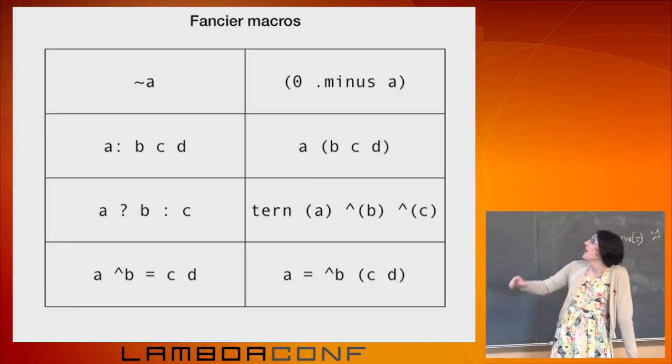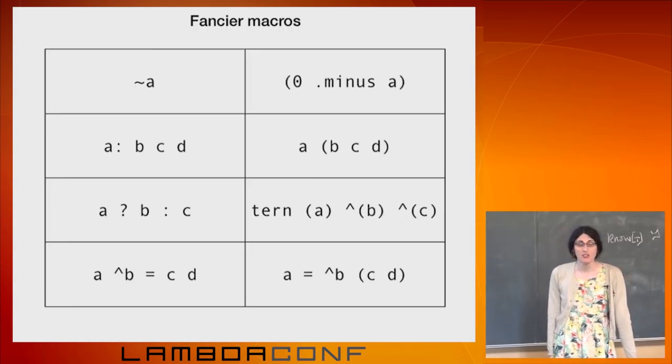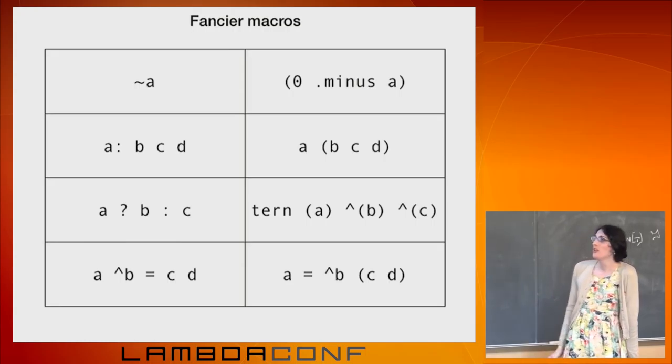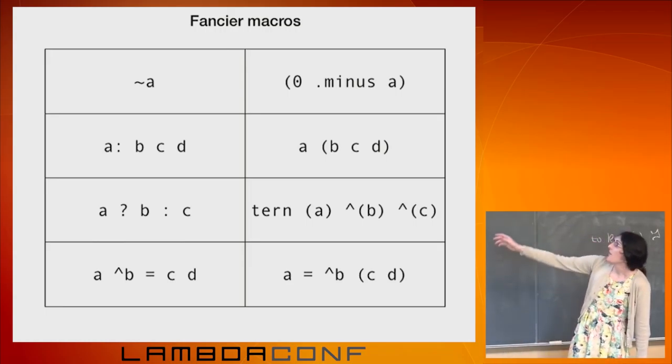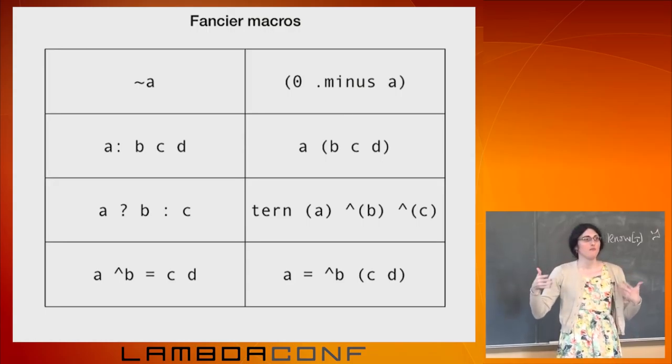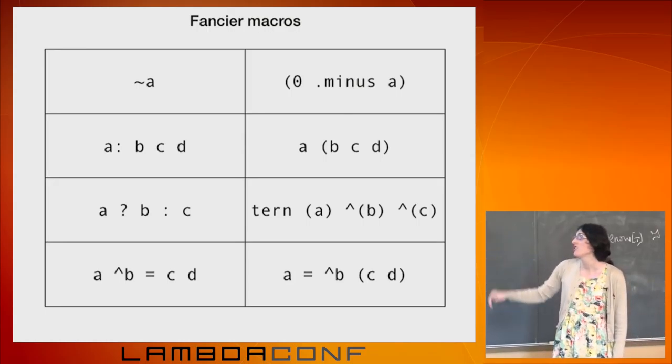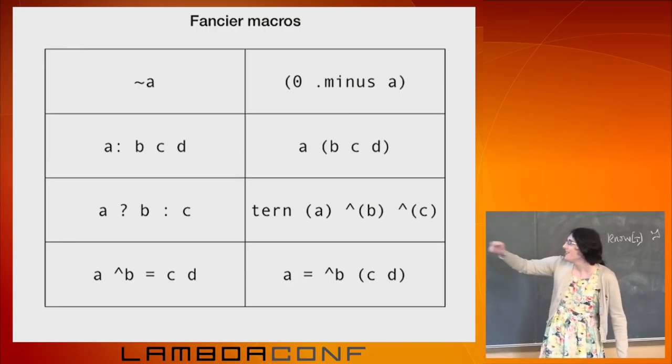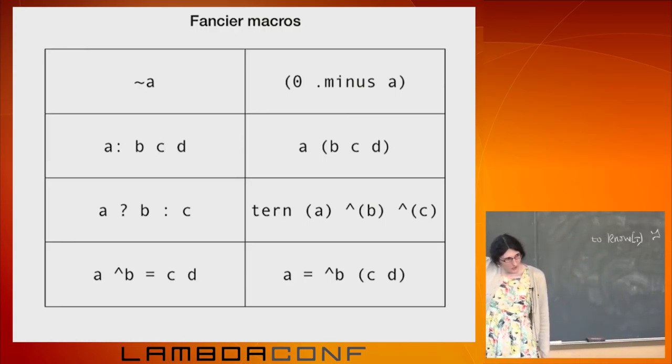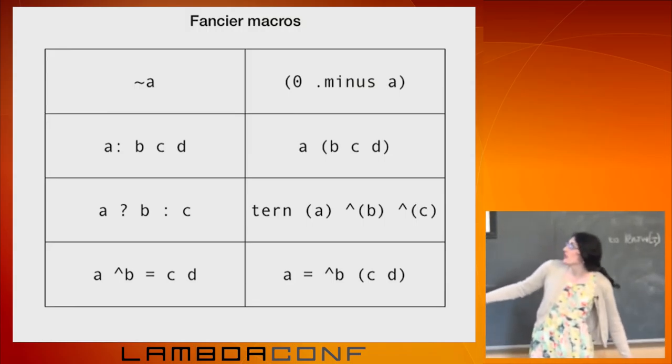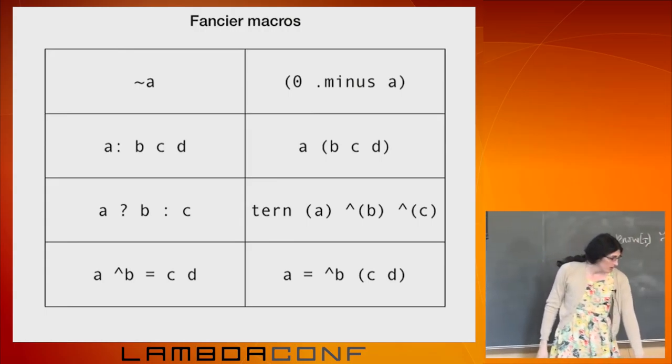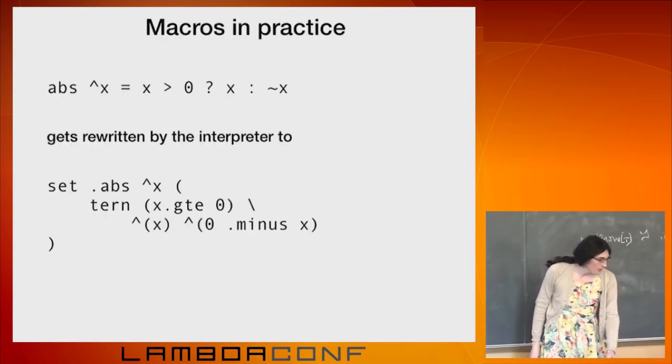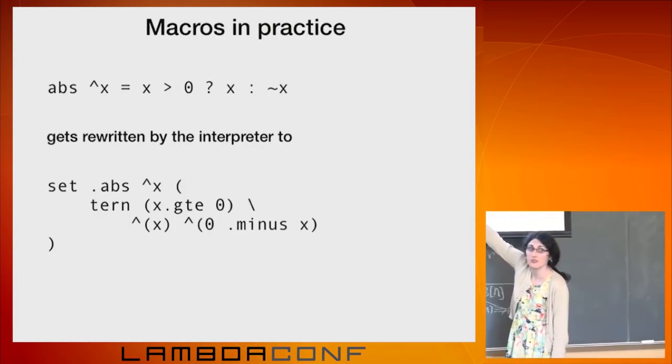A couple slightly more weirder things. I'm going to use tilde a for negation because ML. I'm going to say colon is just the dollar sign from Haskell. I wrap the right side in parenthesis because I hate symbols. And I want to avoid them wherever I can. I'm going to have the question mark colon operator from C, the ternary operator. All it does is call tern. It's not doing anything magic. And then because you spend a lot of time binding variables to anonymous functions in this language, I'm going to make a sugar for that, where if you just put the caret on the left, it automatically moves it to the right for you.